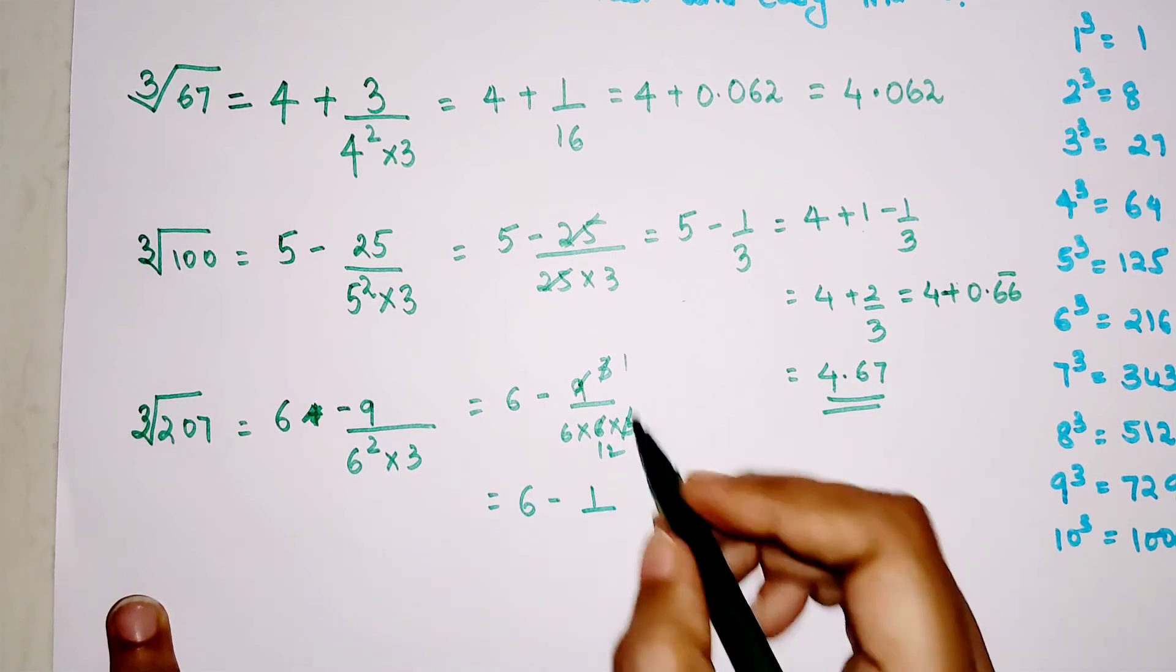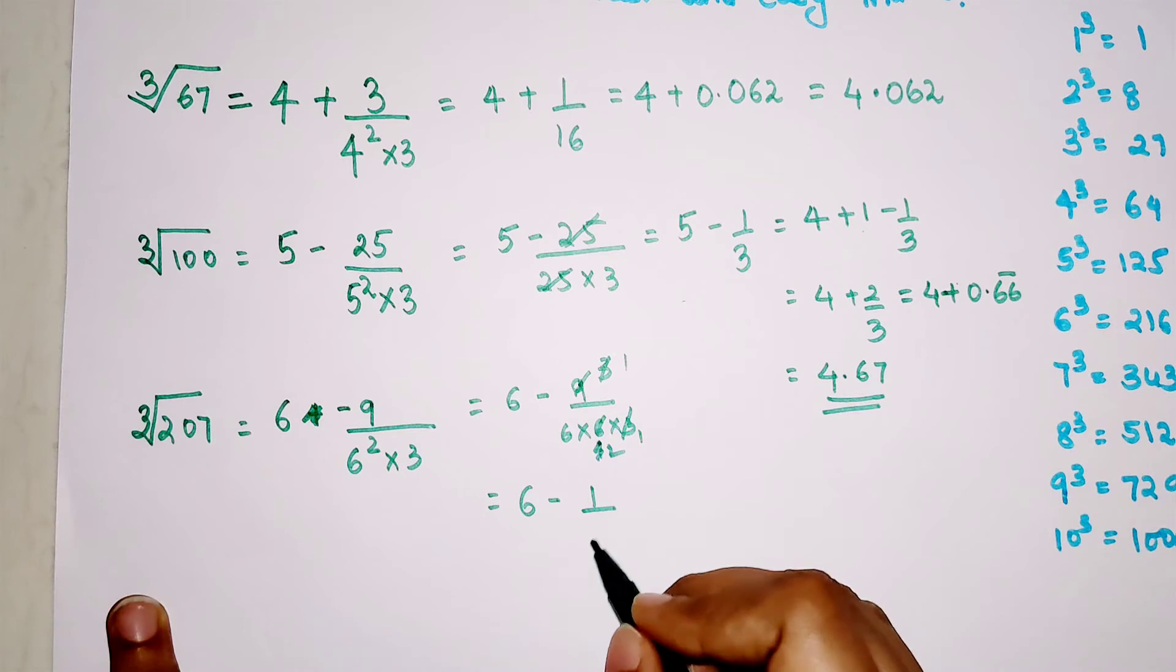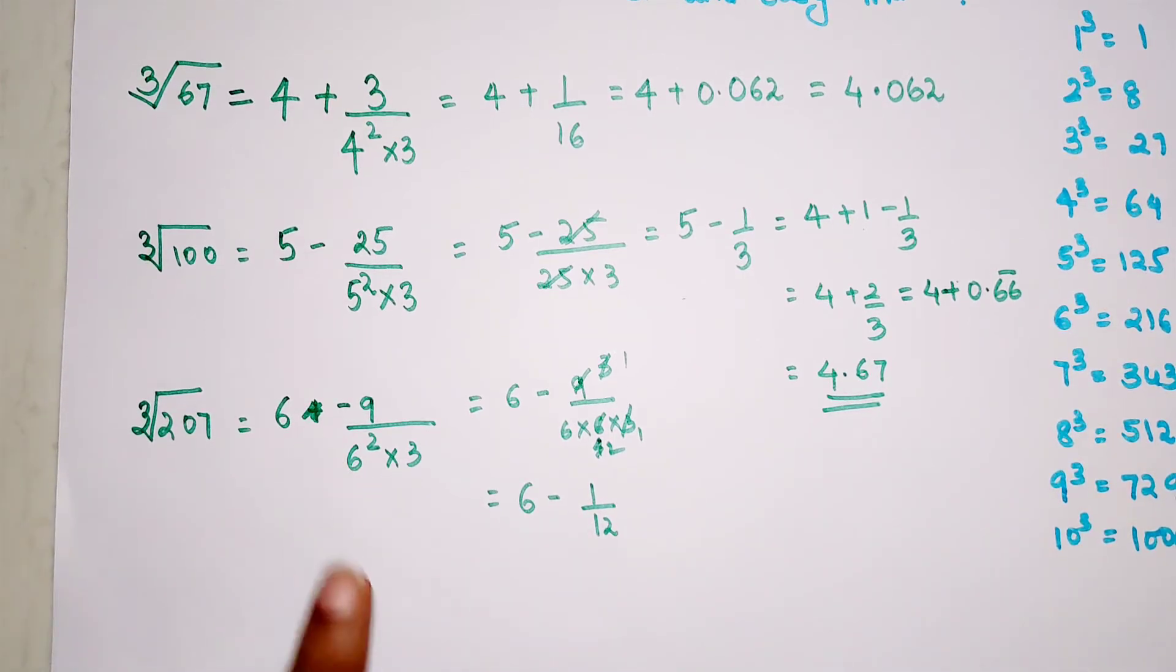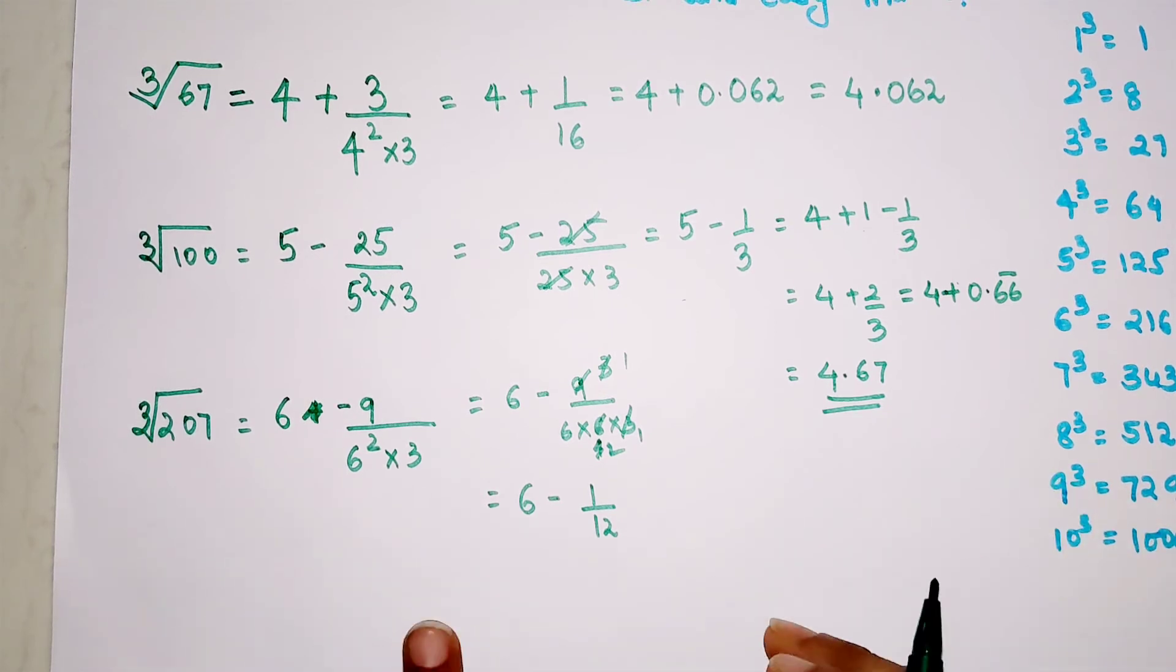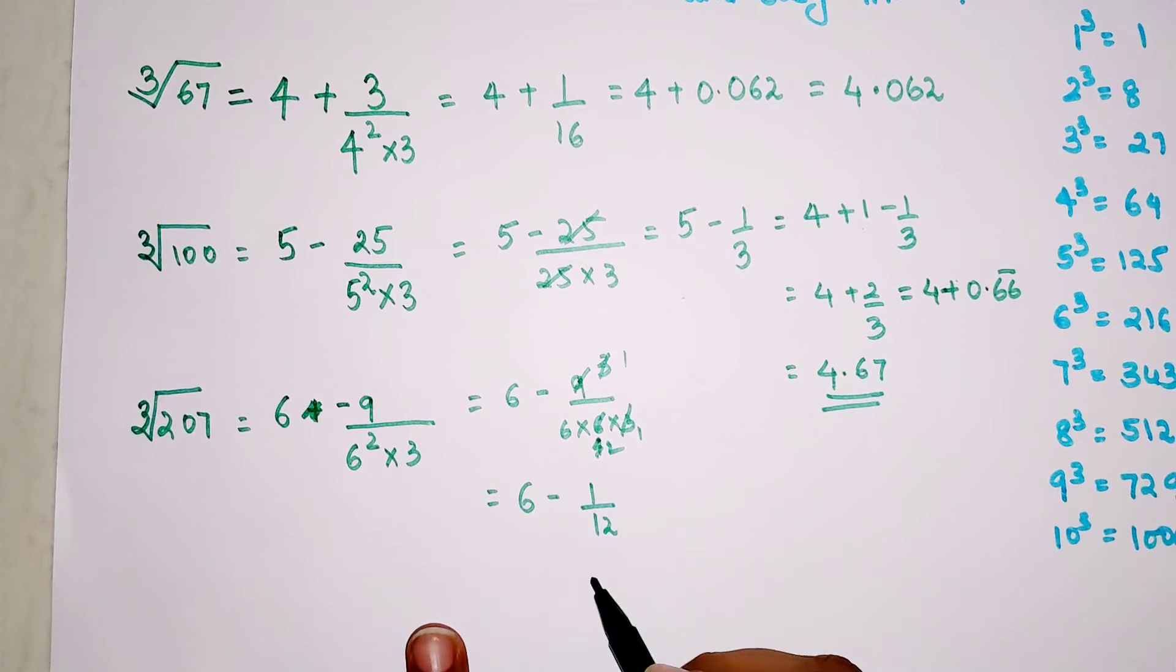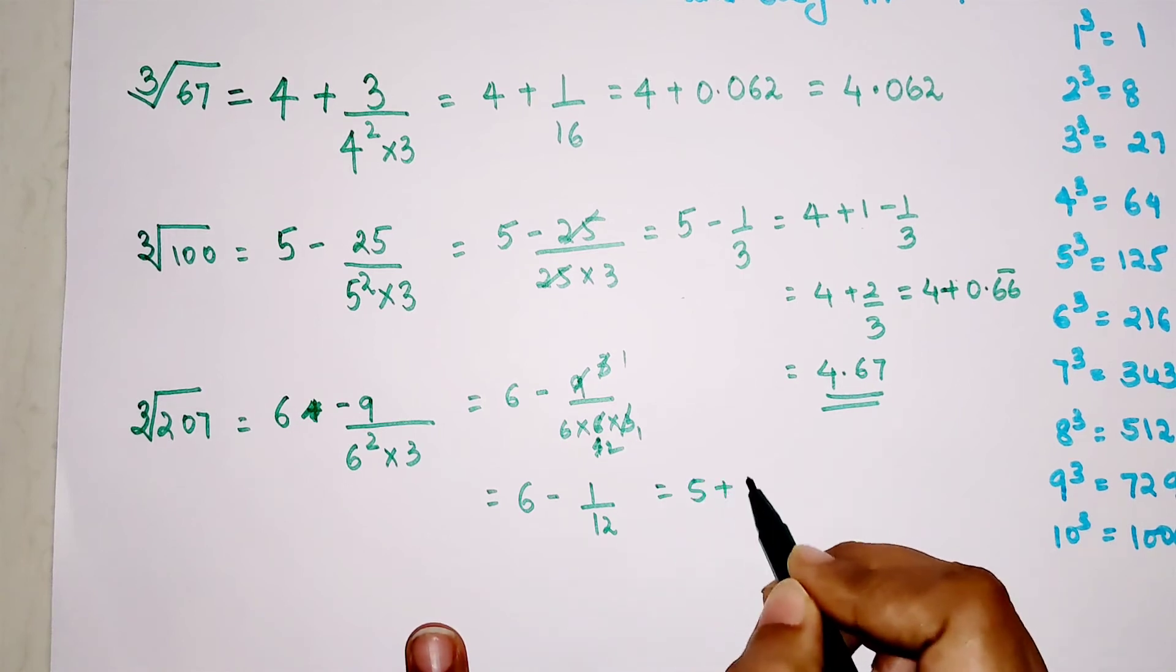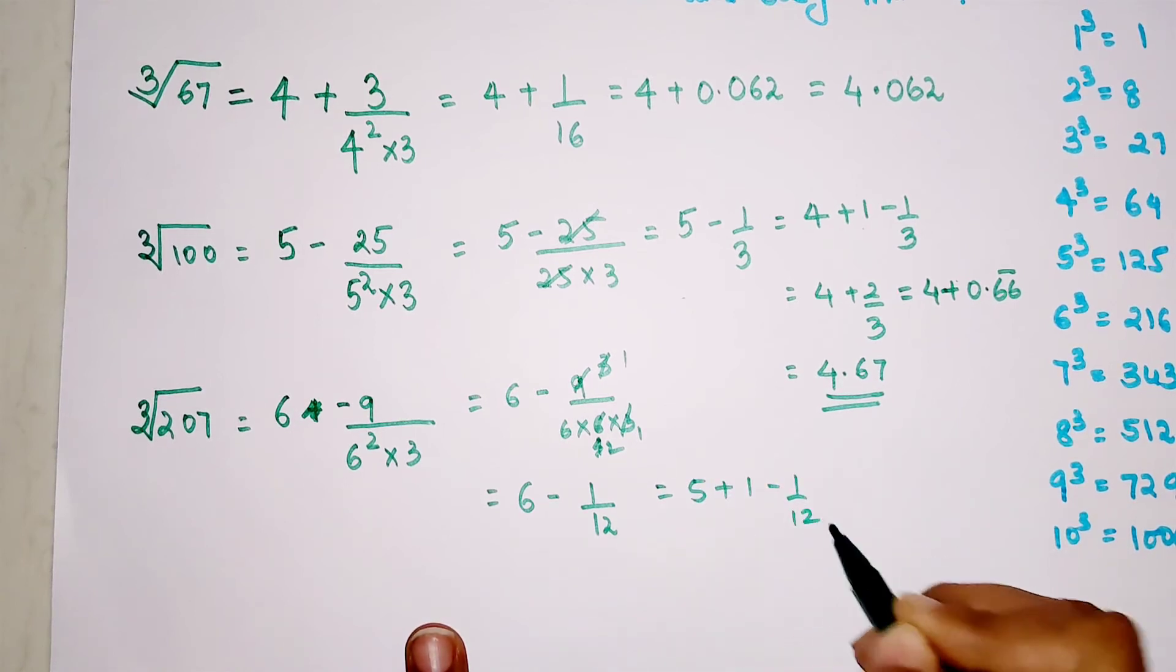Students, don't forget at the end of this video I'm going to put up a DIY question whose answers you can mention in the comment section using the same trick shown. Now, we don't like to subtract decimals, so what we'll do is 5 plus 1 minus 1 by 12.